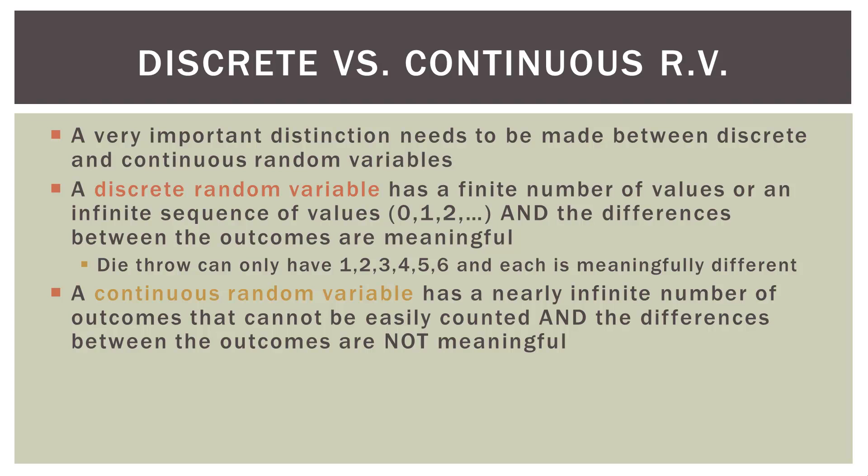Now, a continuous random variable has a nearly infinite number of outcomes that cannot be easily counted. So remember, when we tried to put our average income on a die that we could actually roll, well, the die became just massively full of sides. Even when we had like $100 span in an income, that's a 10,000-sided die. So it's really hard to count that many things, okay? So, they cannot be easily counted.